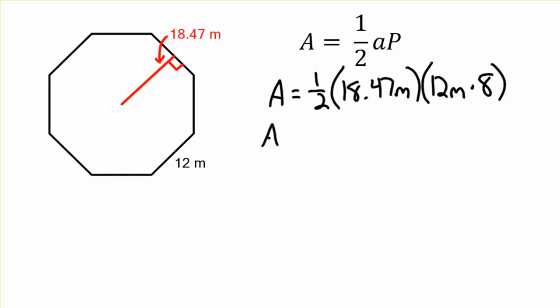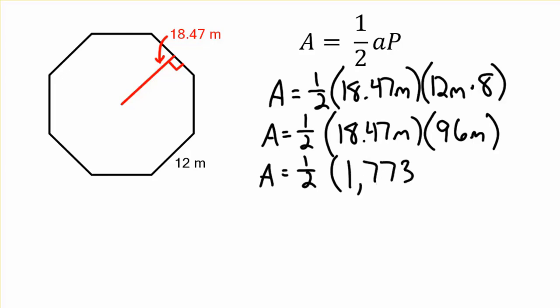So our area is one-half times the 18.47 meters. And again, our perimeter is 8 times 12, that's 96 meters. This time, I'll go ahead and multiply those out, then cut everything in half. Let's keep that one-half on the side. We'll do that last. 18.47 times 96, and our calculator gives 1,773.12. And again, meters times meters is meters squared.